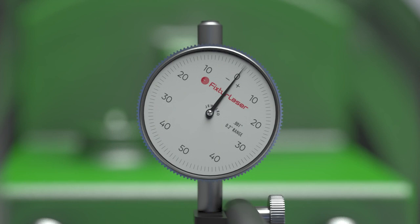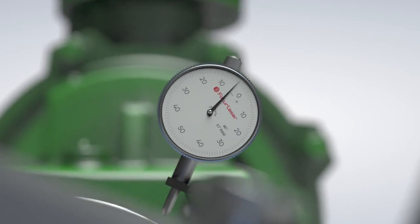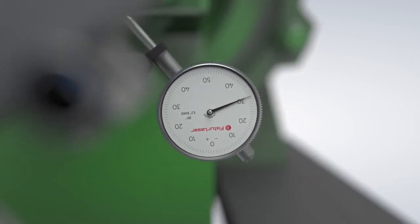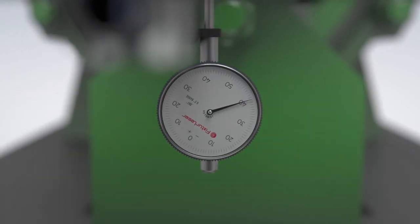Once again, the dial is set at zero at 12 o'clock. As we rotate the shafts to 6 o'clock, we can see the needle moving in the negative direction because the dial's plunger is extending. When we get to 6 o'clock, the dial reads minus 40.